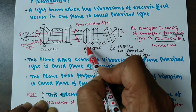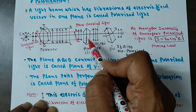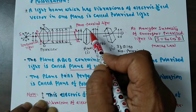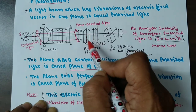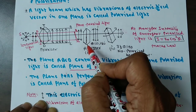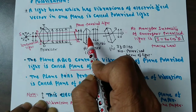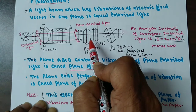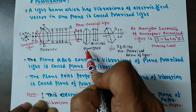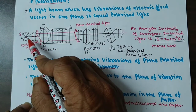Now, if we place a second tourmaline plate, it is called an analyzer. The working of the analyzer is to rotate. When you rotate this tourmaline plate, you can analyze whether the light is plane polarized, circular polarized, or ellipsoidally polarized. In this way, we can analyze the nature of light with the help of the same tourmaline plate or Nicol prism. The working of the analyzer is to analyze whether the light is polarized or not.